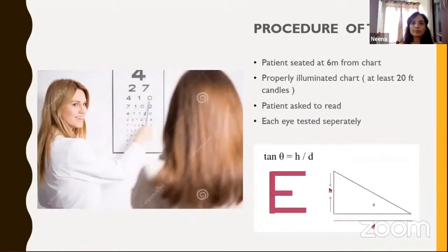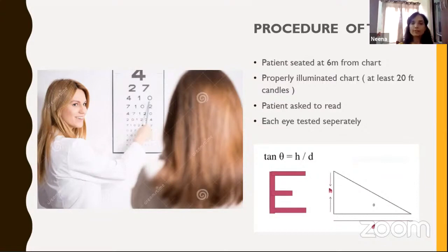Now let's come to the procedure of testing. For the sake of first-year postgraduates, I'll elaborate on that. The patient is seated comfortably at a distance of six meters from the chart. You should have a properly illuminated chart, and the patient is asked to read the chart with each eye tested separately.